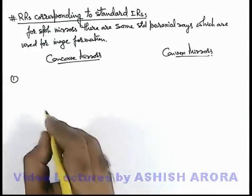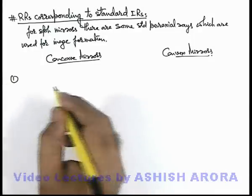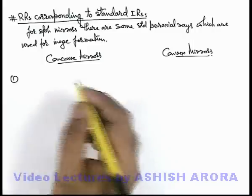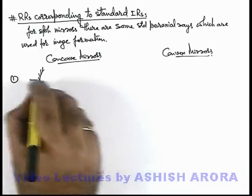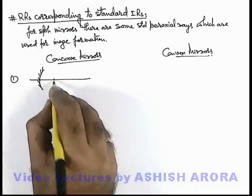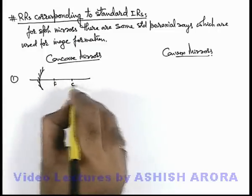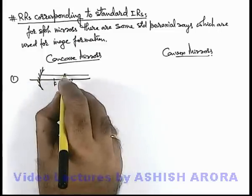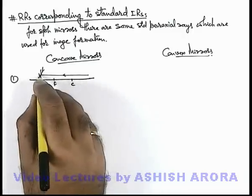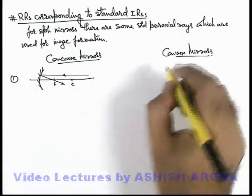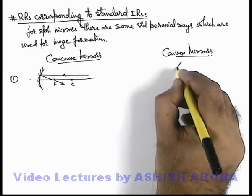The very first ray is the one which is incident parallel to the principal axis of a mirror. If there is a concave mirror with a given focus and center of curvature, and a light ray is incident onto it parallel to the principal axis, then after reflection it passes through the focal point.